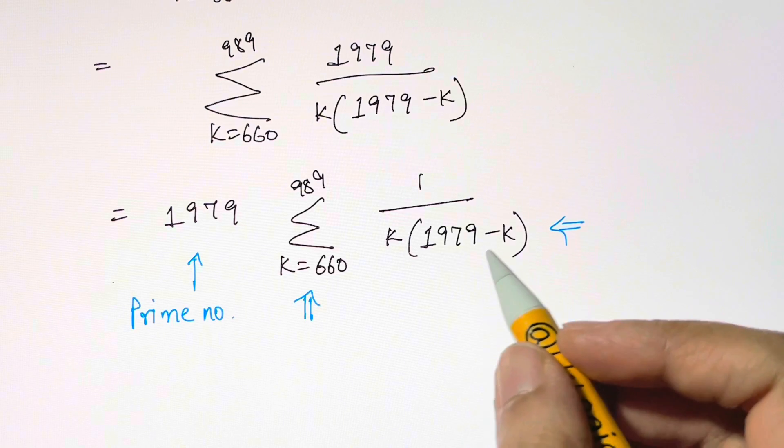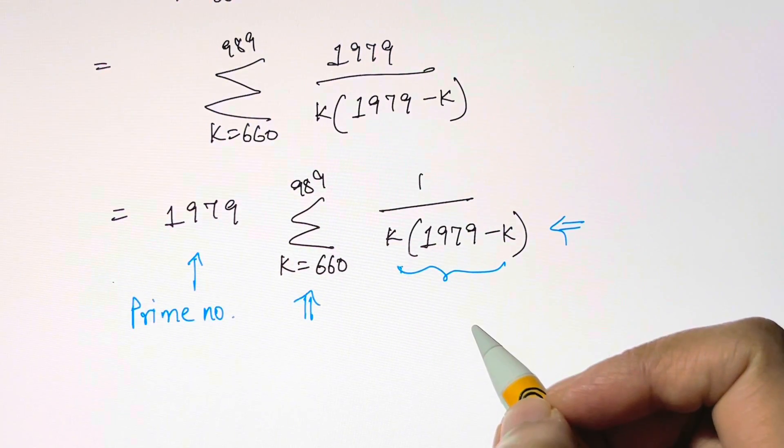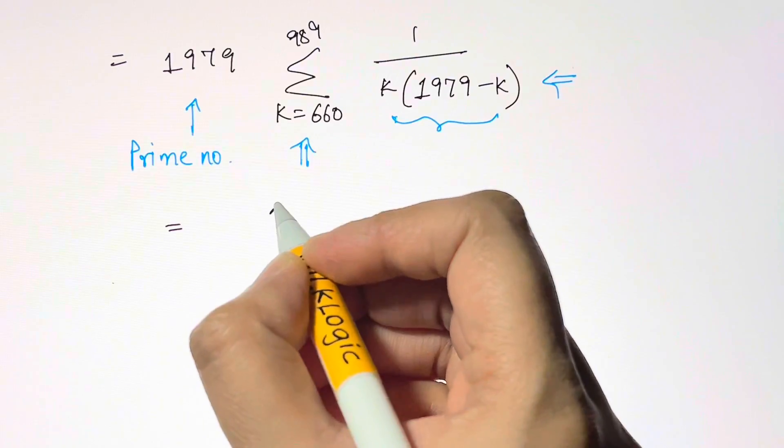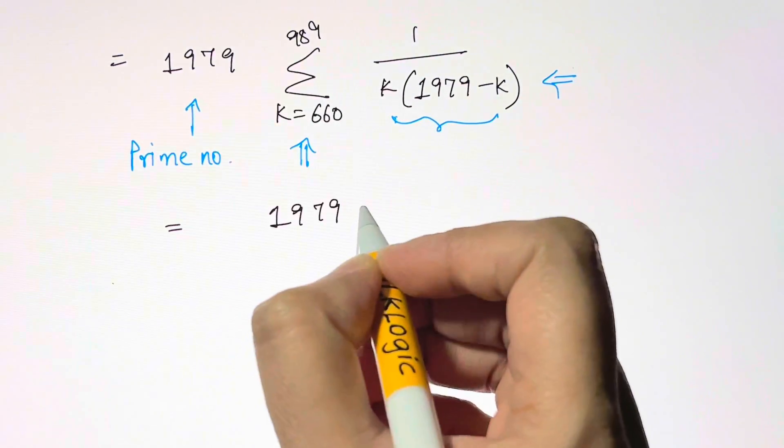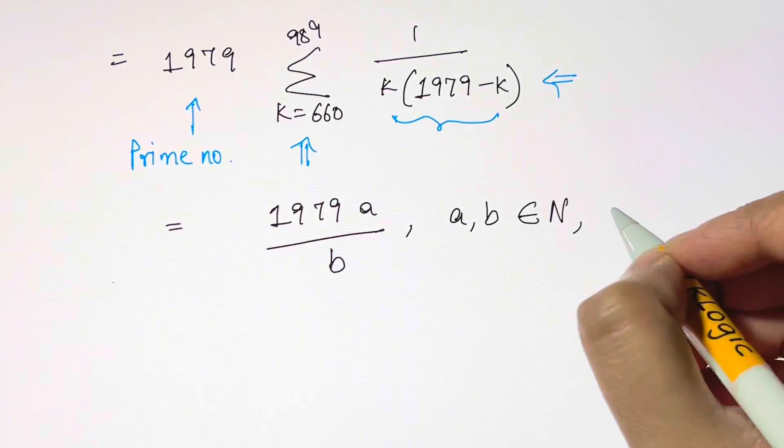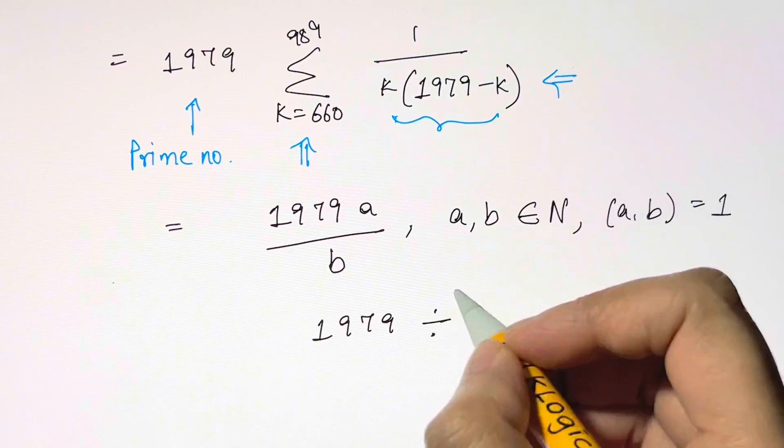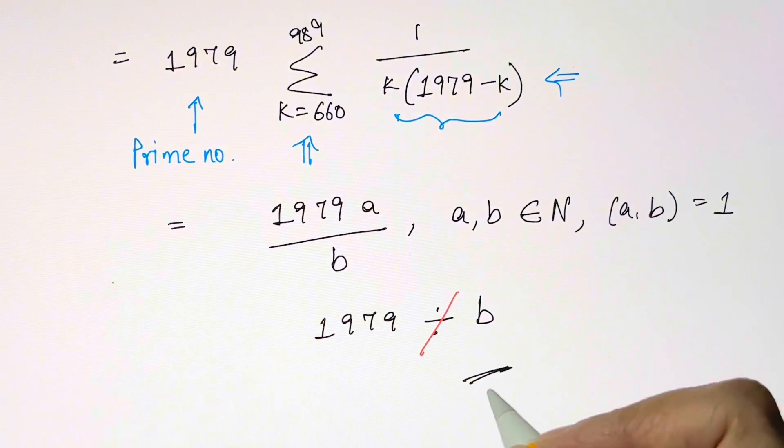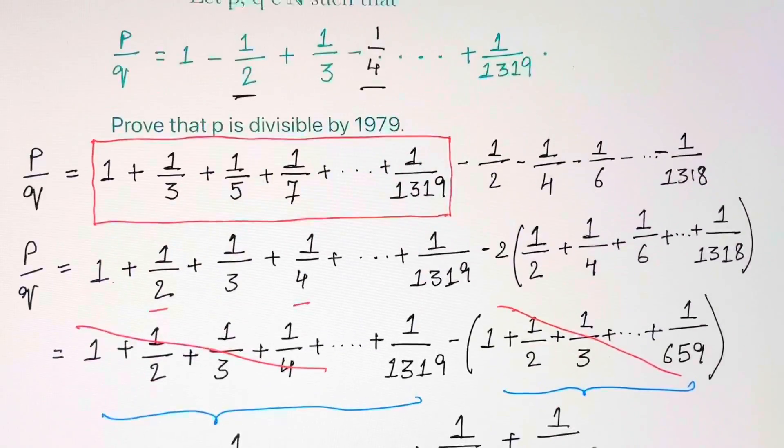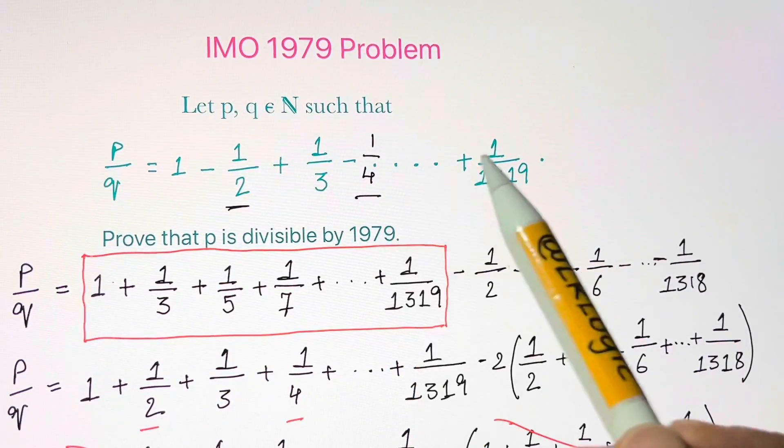When we add fractions we have a very large denominator and a very large numerator. We get 1979 a over b where a, b are natural numbers with gcd(a, b) equals 1. This means 1979 does not divide b. This is the most simplified form of the fraction, so therefore numerator P must be divisible by 1979.